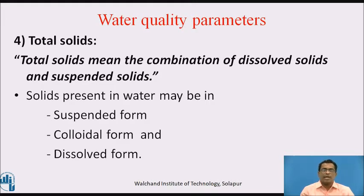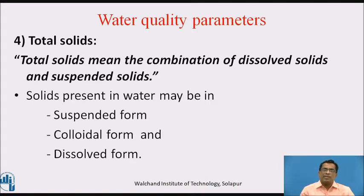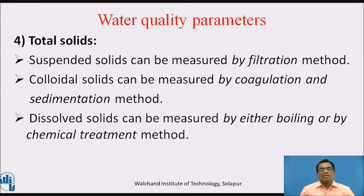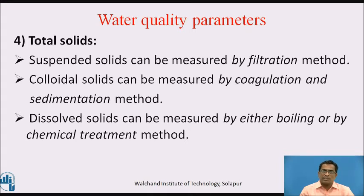Fourth water quality parameter: total solids. Total solids means the combination of dissolved solids and suspended solids. Solids present in water may be in suspended form, colloidal form, or dissolved form. Suspended solids can be measured by filtration method. Colloidal solids can be measured by coagulation and sedimentation method. Dissolved solids can be measured by either boiling or by chemical treatment method.